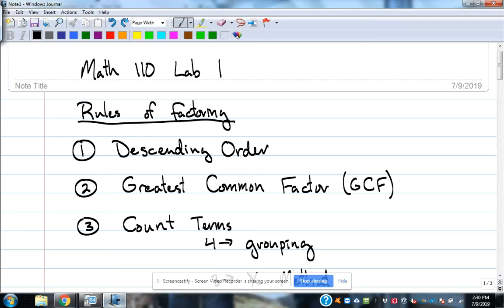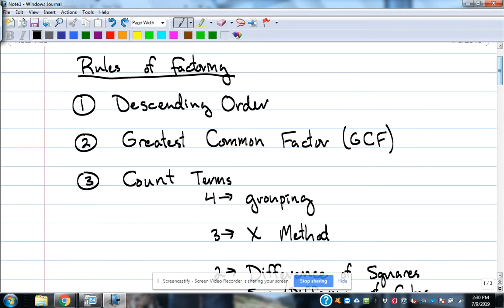Lab number one. We'll talk about factoring and review that from Math 100. The rules of factoring that you want to keep in mind: first, make sure that the polynomial that you're trying to factor is in descending order. That means starting with the highest power of x and going down. So that would be like x squared plus 3x minus 1. That would be descending order.